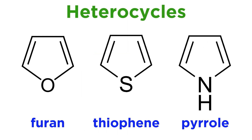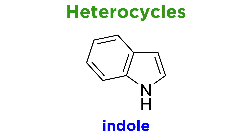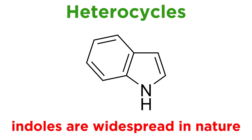Earlier in this series we talked about heterocycles, and one important aromatic heterocycle is the indole, a bicyclic structure involving benzene fused with pyrrole. Indoles are widespread in nature, acting as common subunits of bioactive molecules.